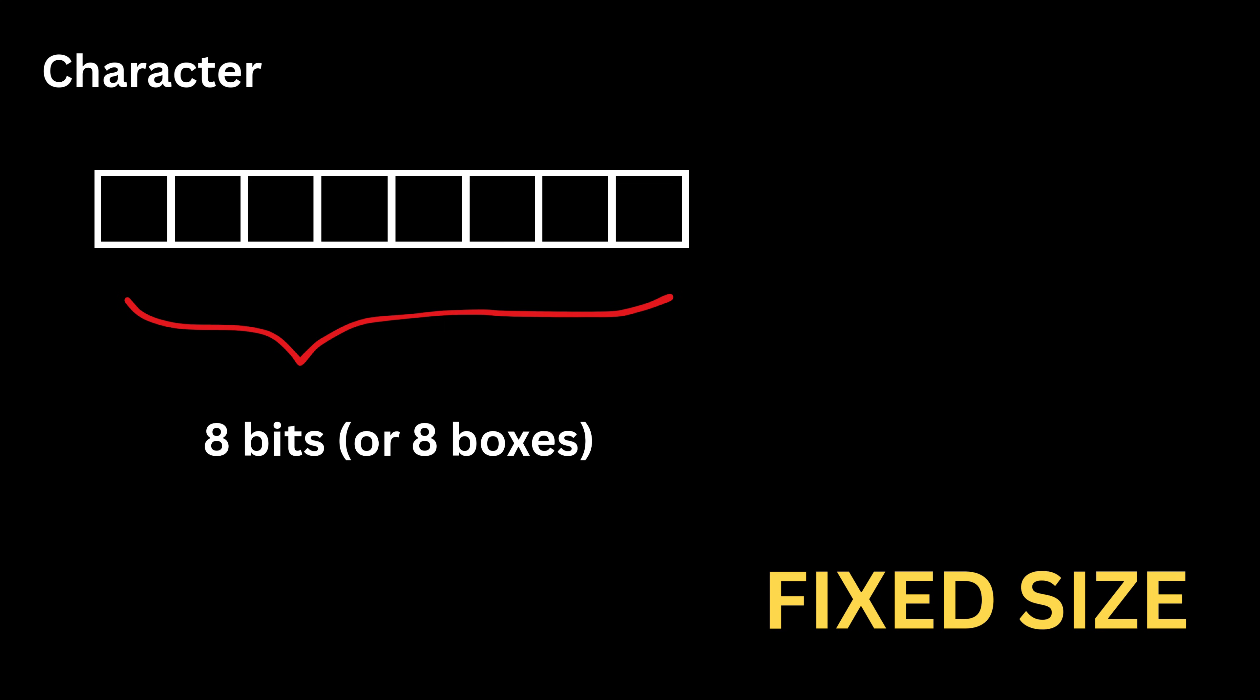A character is typically stored using eight bits, forming what we call a byte. Each character like A, B, or Z has a predefined binary pattern within these eight bits. For example, the letter A has a specific pattern of zeros and ones that the system recognizes. Because every character uses the same eight-bit size, the computer can easily handle strings by processing one fixed size unit at a time.